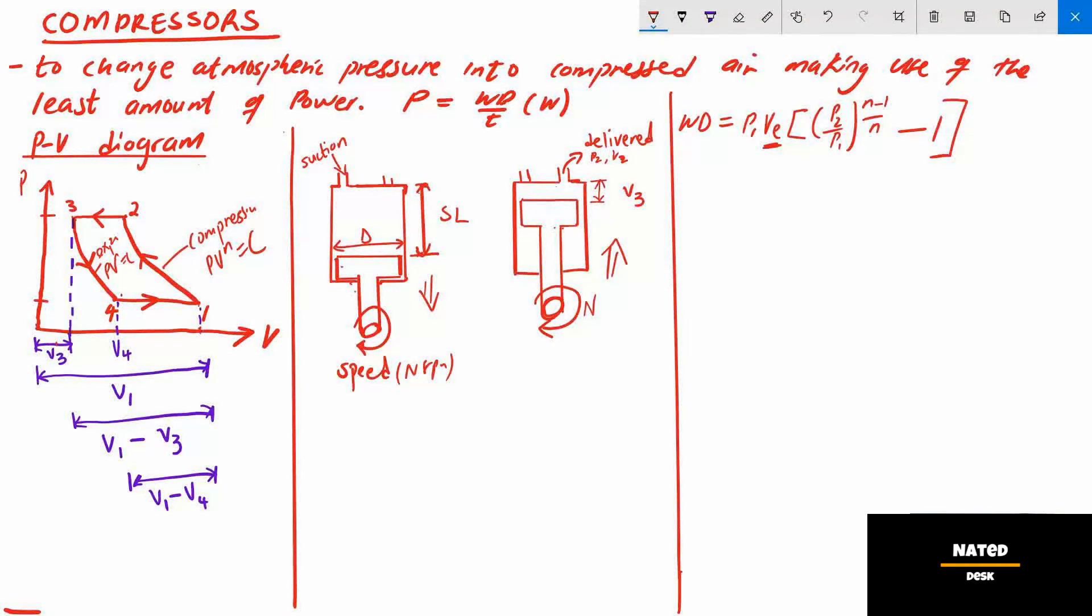Also, the piston in the compressor cylinder is mounted on a crankshaft, hence it rotates at a speed in revolutions per seconds or minute. The speed will multiply the calculated work done and thus the formula will become power now. It will be work done per seconds, kilojoule per seconds is kilowatts. Now to calculate effective volume VE, use the following compressor formulas.